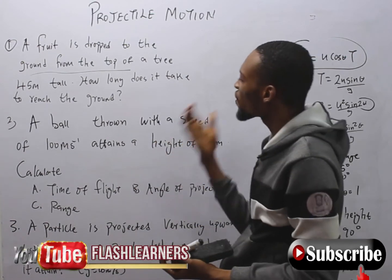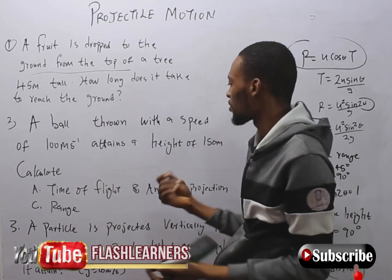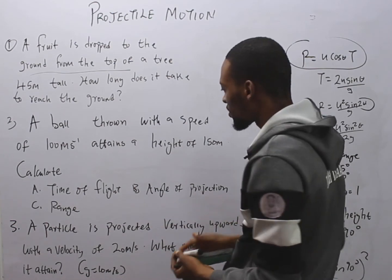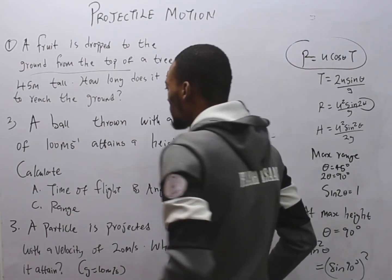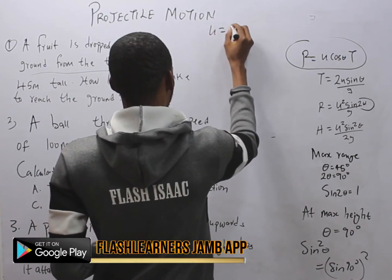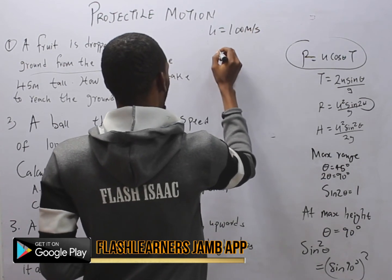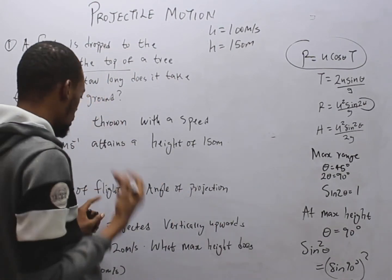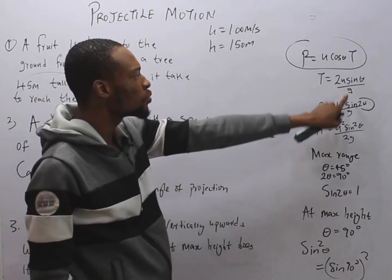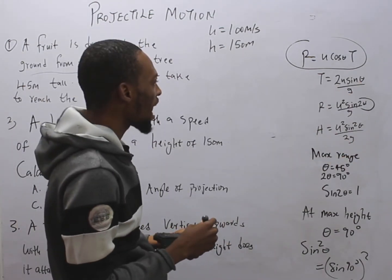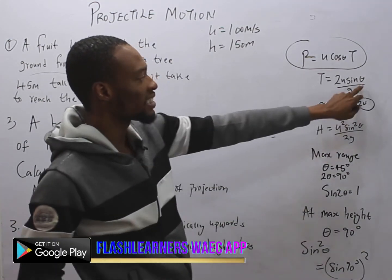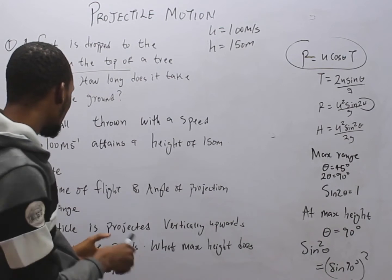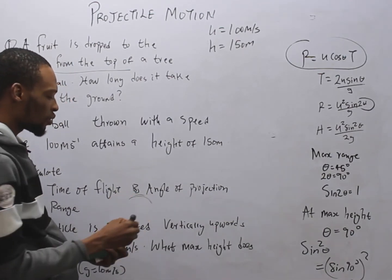Question 2: A ball is thrown with a speed of 100 m/s to a height of 150 m. Calculate: (a) angle of projection, (b) time of flight, and (c) range. Since we have h and u, we use H = u² sin²θ / (2g). We need sin θ = √(2gH / u²) = √(2 × 10 × 150 / 100²) = √(3000/10000) = √0.3 ≈ 0.5477. Therefore θ = sin⁻¹(0.5477) ≈ 33.2°.